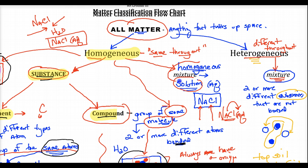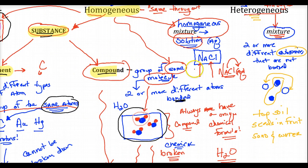Homogeneous mixtures are solutions — sugar dissolving in water is a solution, air is a solution — evenly mixed. Importantly, mixtures can have different amounts: you can have a lot or a little sodium chloride mixed with water. You can change a mixture's proportions any way you want, but a compound only has the exact ratio of atoms bonded.